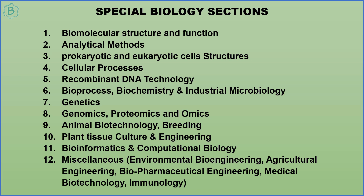Animal biotechnology and breeding covers cell culturing and tissue culturing for animal cells. Plant tissue culture and engineering is the tenth topic, covering hormones required for plant tissue culture, different crops grown, and current developments. Bioinformatics and computational biology typically yields one or two questions per year. Miscellaneous topics include environmental bioengineering, agricultural engineering, biopharmaceutical engineering, medical biotechnology, and immunology, though the first eleven topics are of utmost importance.